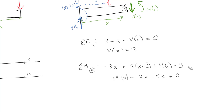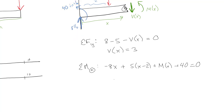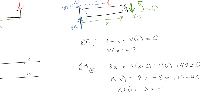Oh, I forgot the 40! Don't forget the 40 inch-pounds — she matters, she's important. Okay, so with the 40 included: negative 8x plus 5(x minus 2) minus 40 equals negative M(x). Working through the algebra — minus 5x plus 10 minus 40 — so M(x) equals 3x minus 30.